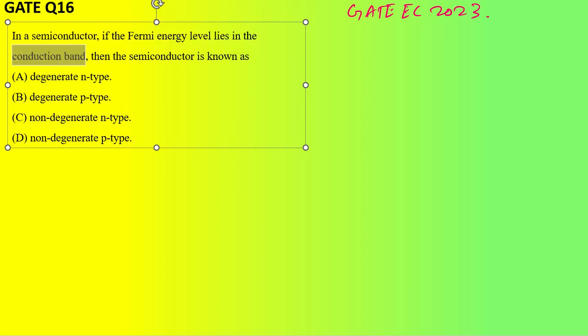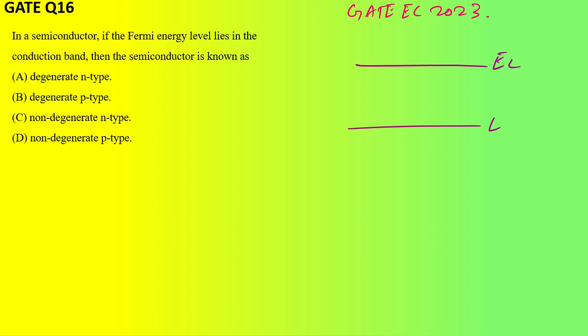First of all, you have to understand what is the meaning of Fermi level lies in conduction band. You have two bands: one is your conduction band, one is your valence band. Let's say this is my intrinsic level or Fermi level, but the thing is the Fermi level has gone inside here, somewhere like Ef or Efn.